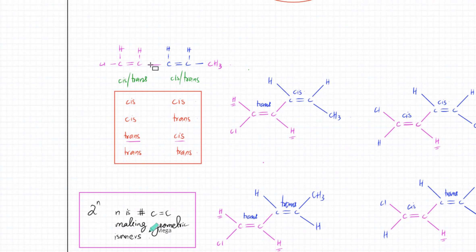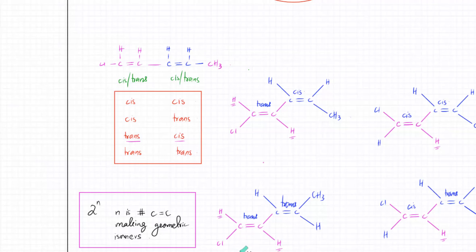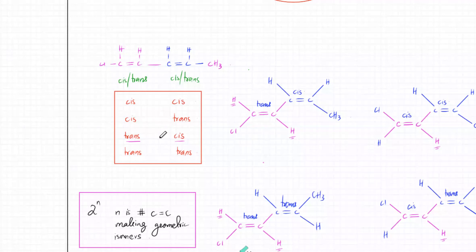If you have three double bonds and all of them are making geometric isomers, you get 8 combinations. You can make a table: the first double bond cis, the second cis, the third cis; then cis, cis, trans; then cis, trans, cis — and so on. There would be 8 different combinations. Also remember: if they ask you about the type of isomers, it is geometric isomers — not cis-trans. Cis and trans are the names of the two individual isomers.